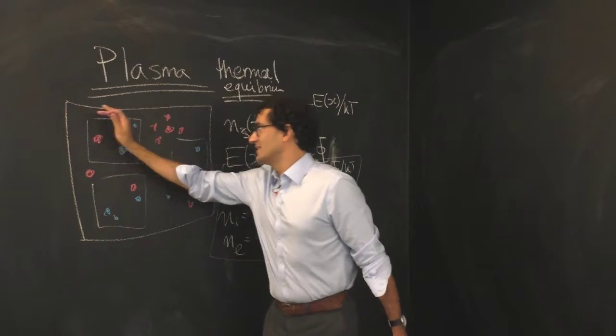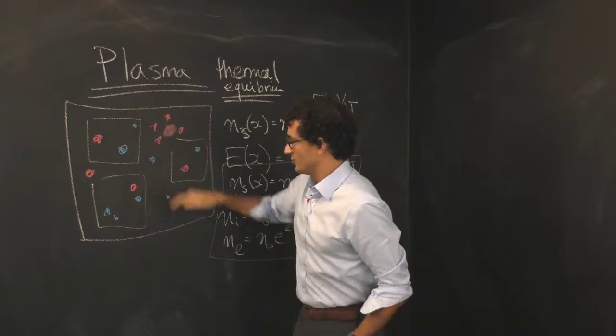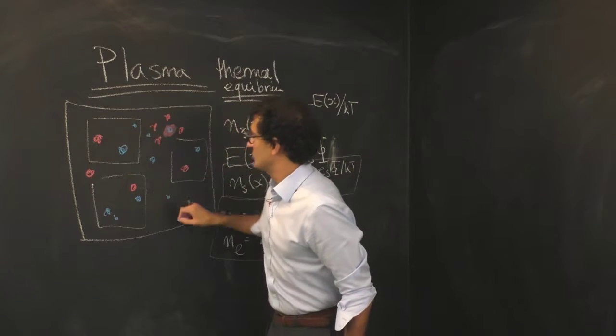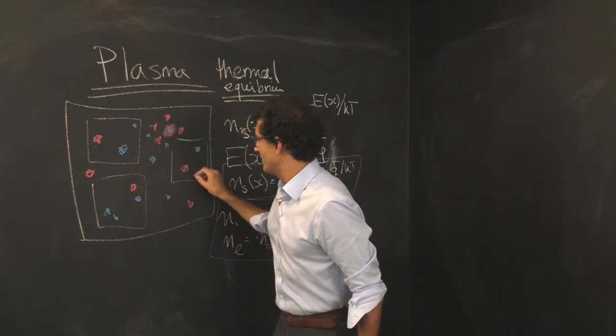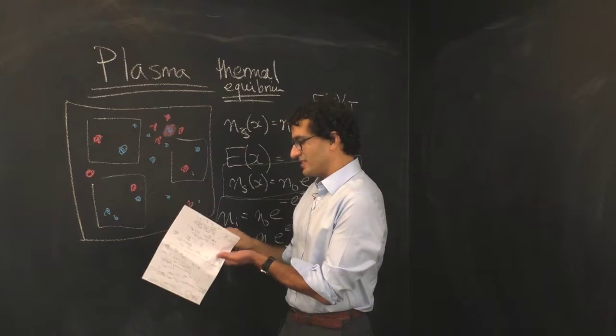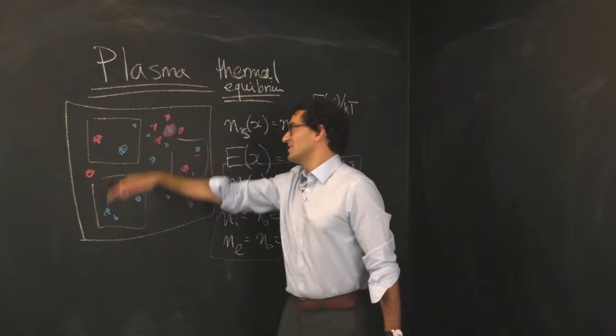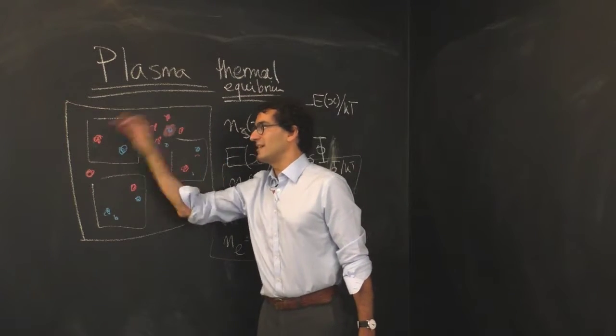In other words, you imagine this system to sort of be more and more structured, that whenever you see a positively charged particle you're going to probably see some negatively charged particles nearby sufficient to cancel them out. Conversely, when the temperature is really high, the system is just flowing back and forth, all these particles are bouncing around as they will.